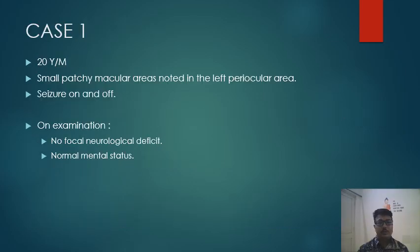The first case is a 20-year-old male who presented with a small patchy macular area noted in the left periocular region. He had seizures on and off. On examination, there was no focal neurological deficit and normal mental status. There was no mental retardation or disability seen.